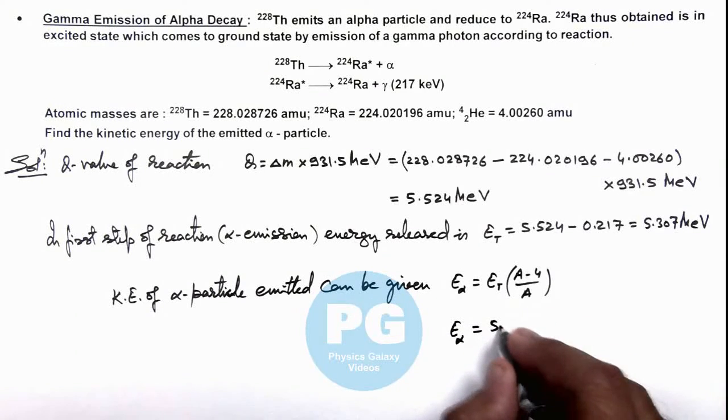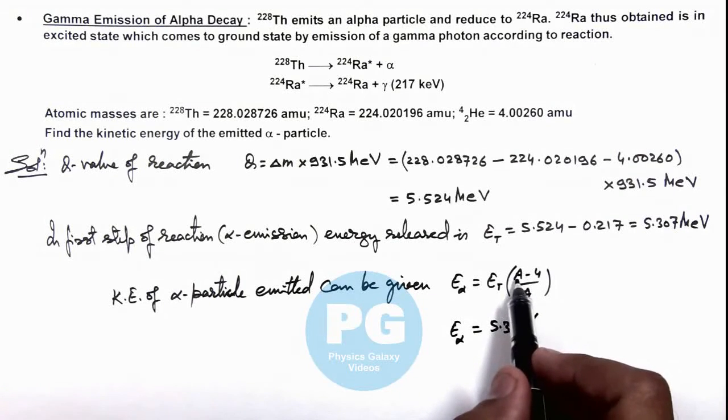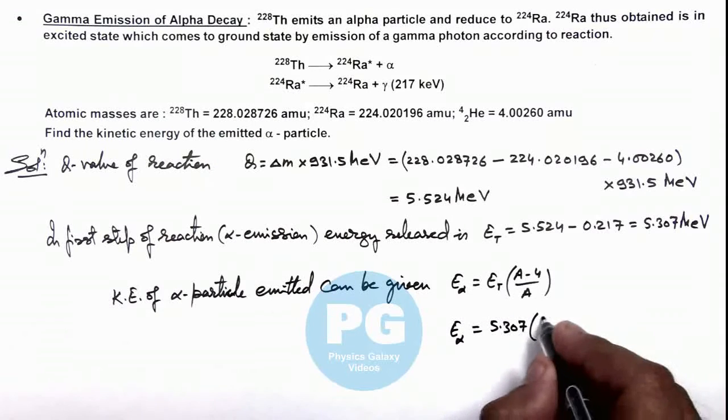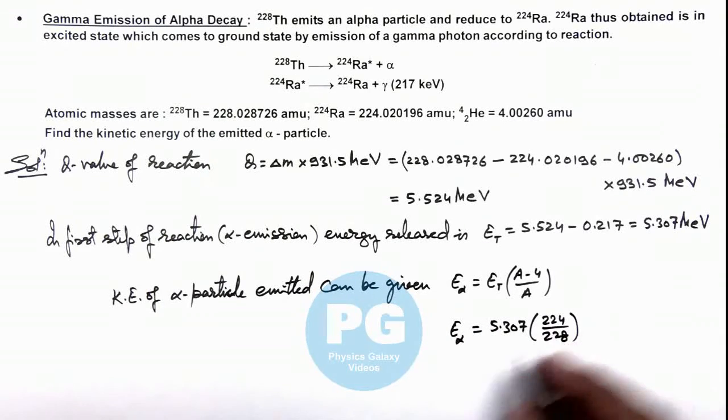Here if we substitute the value of alpha particle's energy, this is 5.307 multiplied by, here A is 228 for thorium so we'll write it 224 by 228. Numerically on calculating, this value is 5.214 million electron volts.